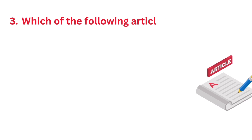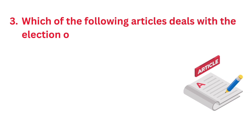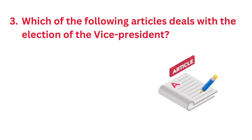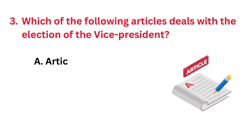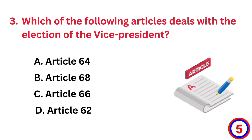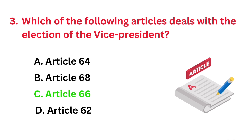Which of the following articles deals with the election of the Vice President? The correct answer is option C: Article 66.